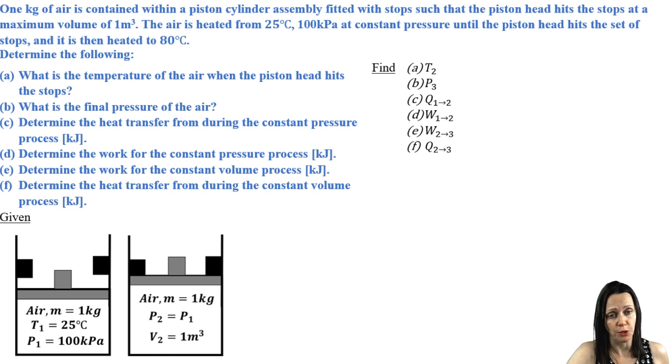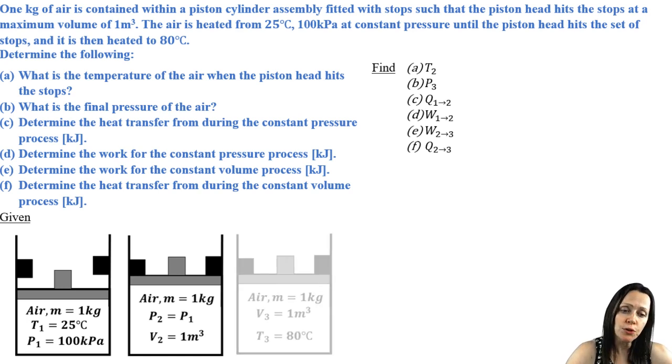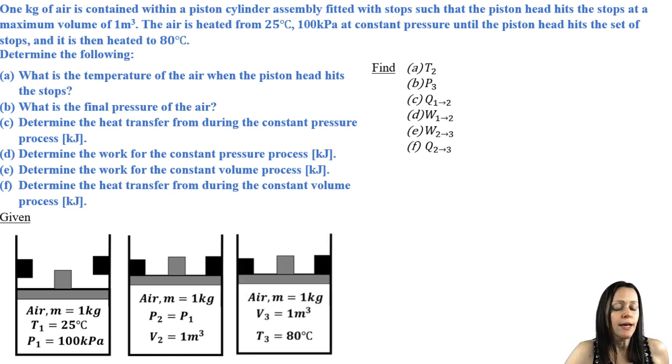That's the maximum possible volume that it could be at. But then it's further heated to 80 degrees Celsius, still at a volume of one meter cubed because those stops prevent any further expansion from occurring. So if I look at A, B, C, D, E, and F, clearly the temperature of the air when the piston head hits the stops, that's at state two. The final pressure is at state three. The process from two to three is the constant pressure process. The process from two to three is the constant volume process.